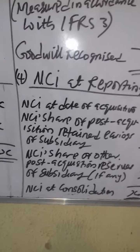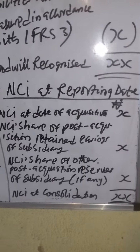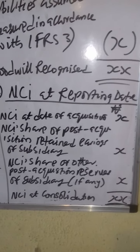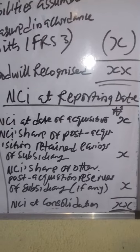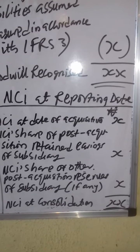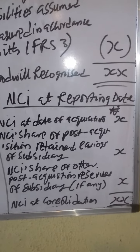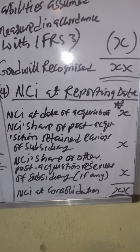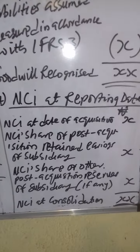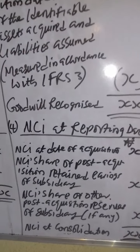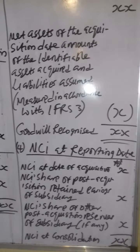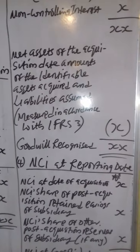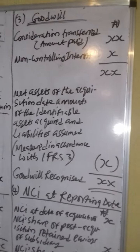Continuing format 4: we have NCI at acquisition date, plus NCI share of post-acquisition retained earnings, and NCI share of all other post-acquisition reserves of the subsidiary. Adding these together will give you NCI at consolidation.